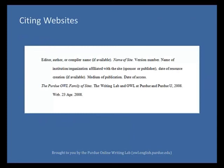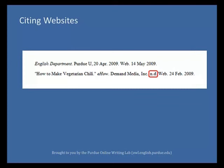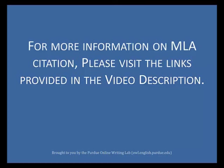When citing an entire website, list your date of access. First, list the editor, author, or compiler name if available, followed by a period. Next, list the name of the site in italics, followed by a period. List the version number, followed by a period. Indicate the institution or organization affiliated with the site, followed by a comma, and the date of resource creation, followed by a period. Indicate the medium of publication, followed by a period. And finally, list your date of access, followed by a period. To cite an individual page on a website, list the author or alias if known, followed by the information previously discussed for entire websites. Since different websites provide different kinds of information, citations for web-based sources can take many different shapes — include as much information as you can find. If no publisher name is available, use N.P. For more information on MLA citation, please visit the links provided in the video description.